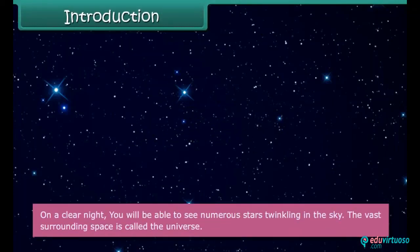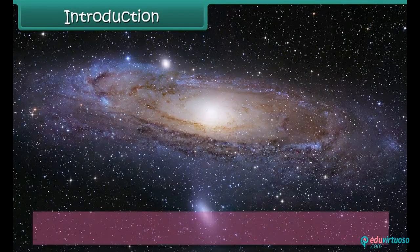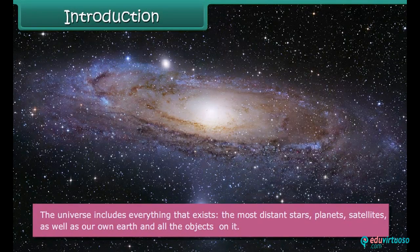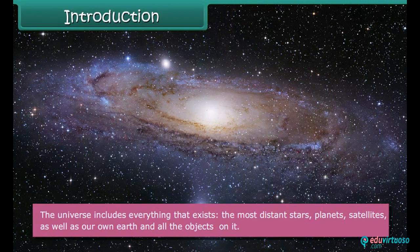On a clear night, you will be able to see numerous stars twinkling in the sky. The vast surrounding space is called the Universe. The Universe includes everything that exists—the most distant stars, planets, satellites, as well as our own Earth and all the objects on it.